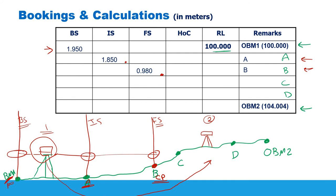From the new location — Station 2 — I'm going to sight the change point B. Because it is the first reading after I set up the level in the new location, it is called a back sight over B. I write it down on the same line for B, and the reading is 3.780.